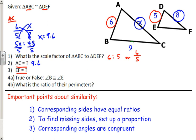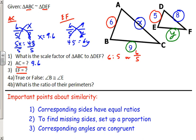To find EF, I'll call it Y. BC, which is 9, corresponds to EF. The setup is: 6 is to 5 just as 9 is to Y. Remember, if you go big to small with your first ratio, you must go big to small with your second ratio. Cross multiplying and dividing: 6Y equals 45, so Y equals 7.5. EF equals 7.5. That's how you find missing sides in similar figures.